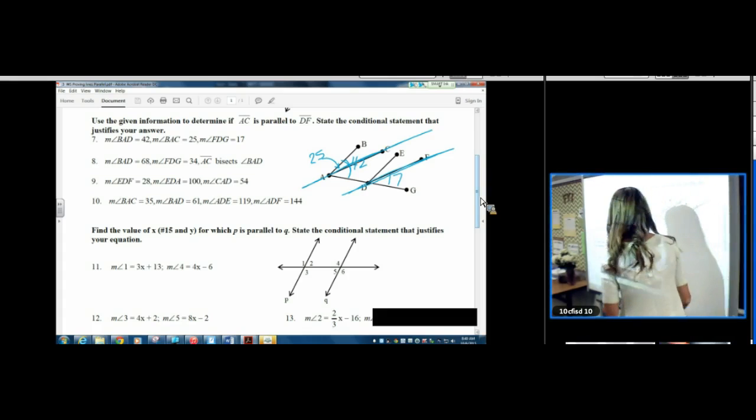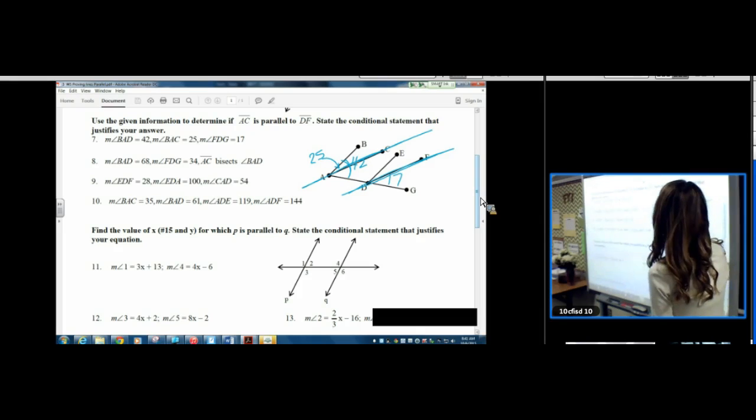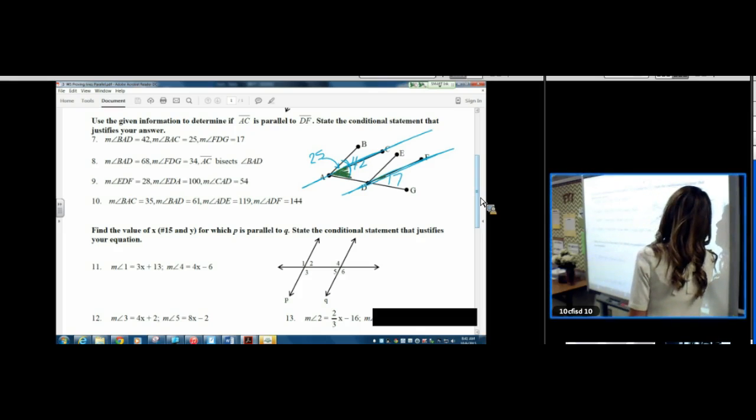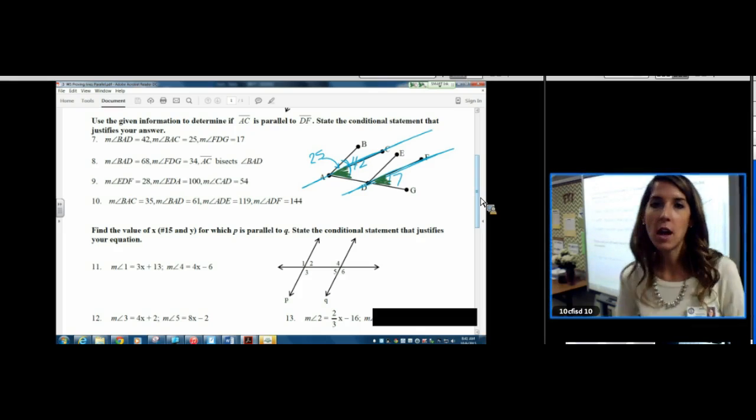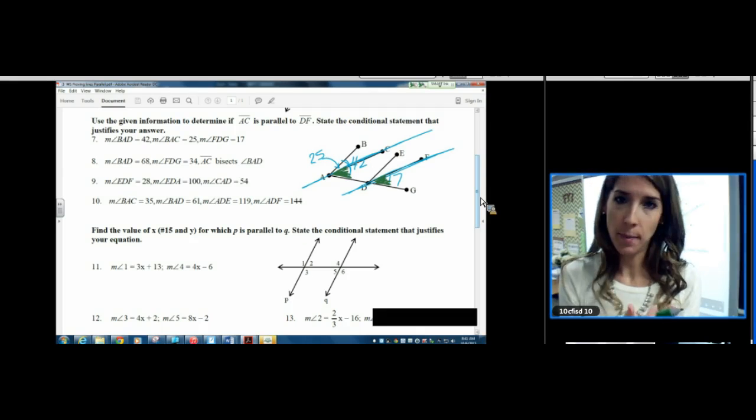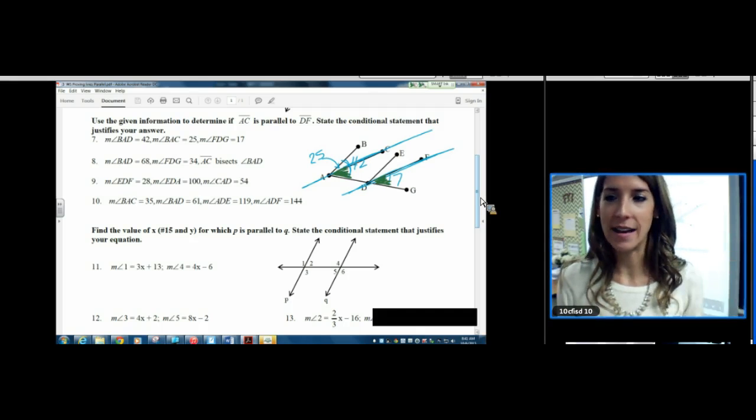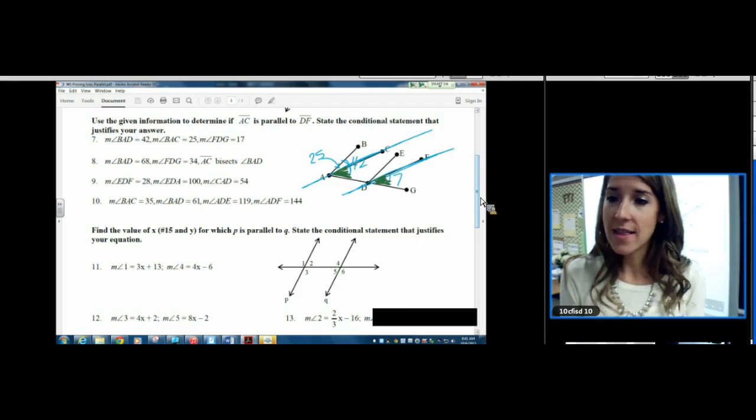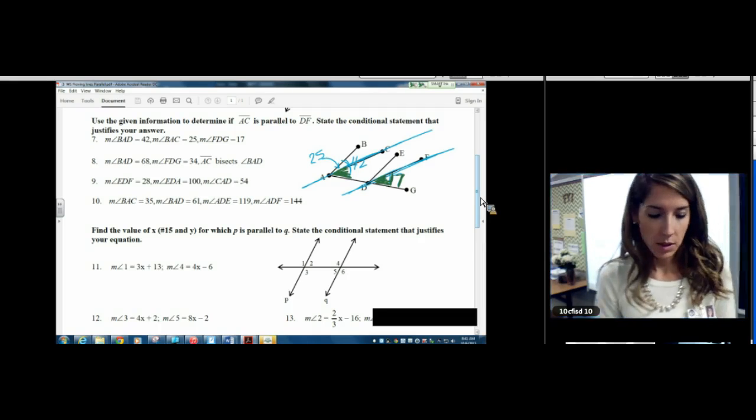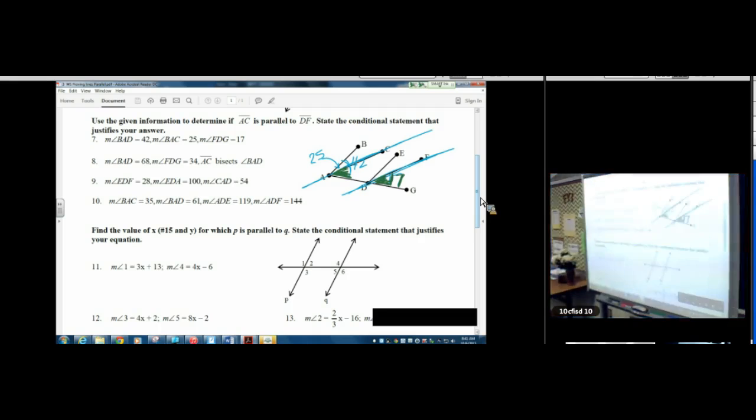So what we want to look at here is we want to look at this angle, and we want to look at this angle. Those are corresponding angles. If they happen to be congruent, boom, the lines are parallel. If they're not congruent, then all bets are off. The lines are not parallel. So we need to find that missing angle. We already know that this one right here is 17. So we need to find the other one.